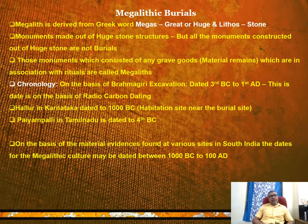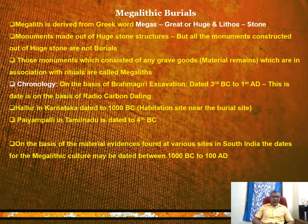There are different types of megalithic burials found throughout India, more particularly in South India and Tamil Nadu, scattered from north to south Tamil Nadu, in various orientations and different shapes and sizes. This is because of the availability of raw material in particular regions. Chronologically, on the basis of the Brahmagiri excavation, the megalithic culture was dated to 3rd century BC to 1st century AD. Hallur in Karnataka was dated to 1000 BC in the habitation and burial sites.